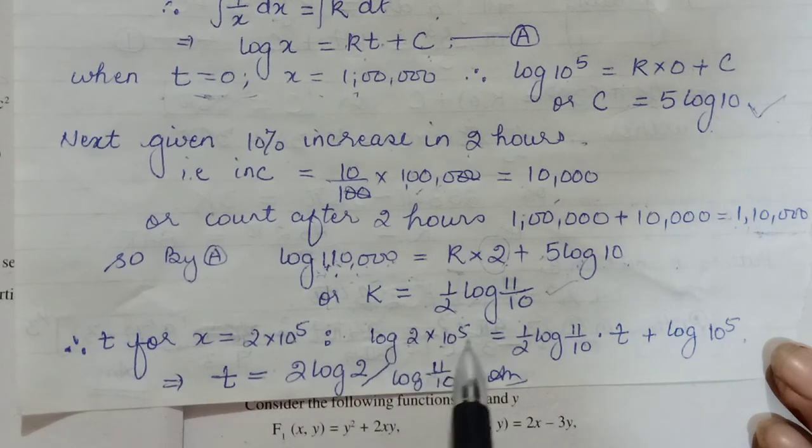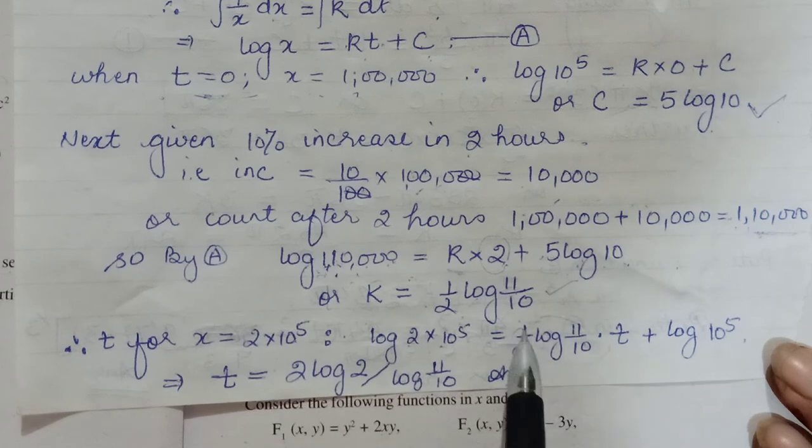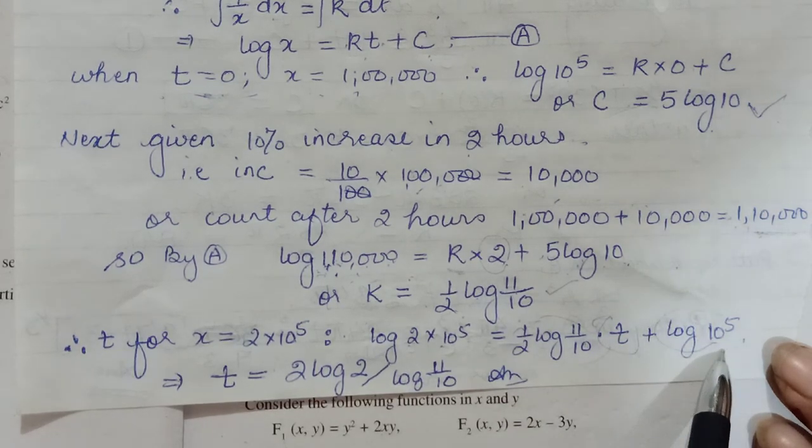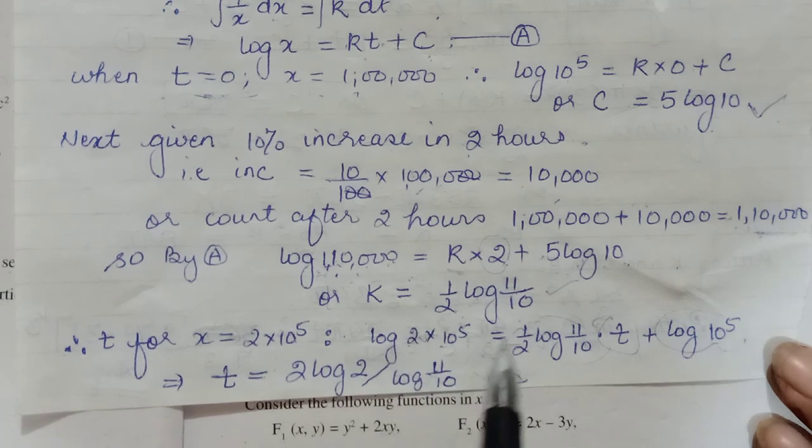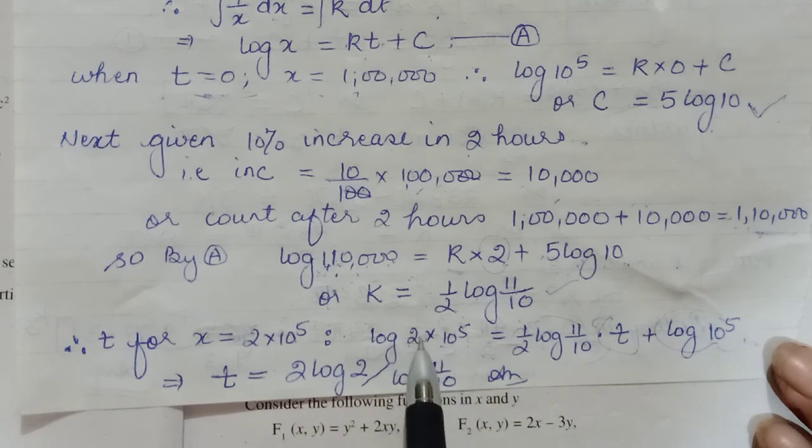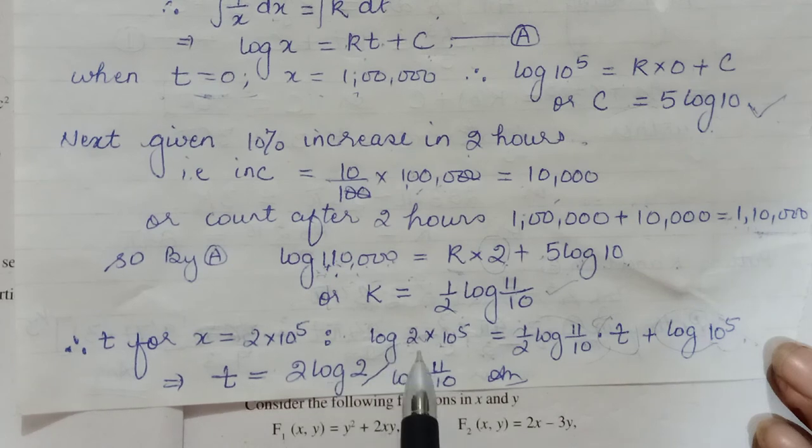Okay. So your x is 2 lakh, and then t is what you have to find. So log of 2 lakh is equal to this was our k. T we have to evaluate, this was our C. Now this calculation you will do. So again here your 10^5 10^5 log can balance.